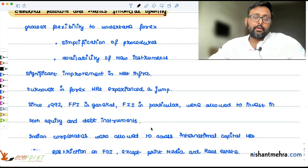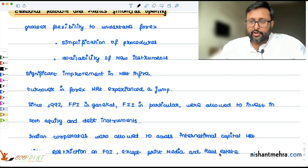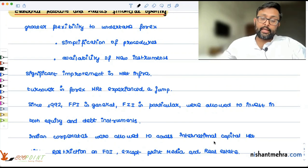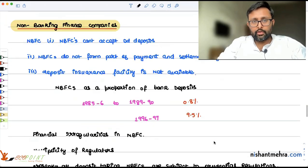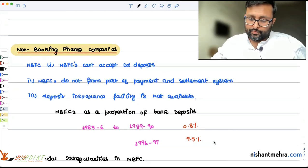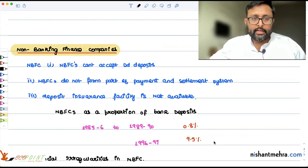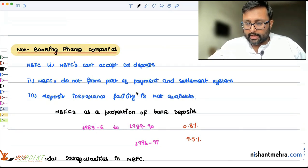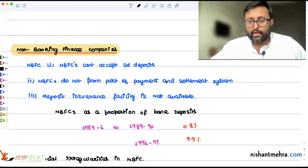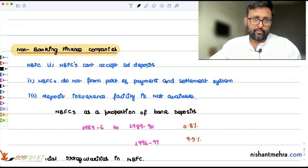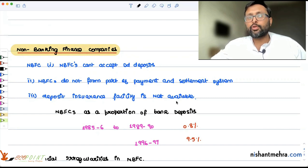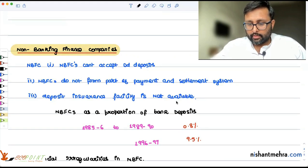As far as FDI is concerned, mostly FDI is allowed in most of the sectors except print media and real estate. The non-banking financial finance companies are different from the banking sector. One thing is that they cannot accept demand deposits as the banks can. They also do not form part of the payment and settlement system, so they cannot issue checks drawn on itself. The deposit insurance facility is also not available in the NBFCs to depositors.